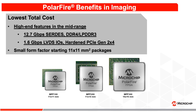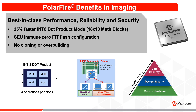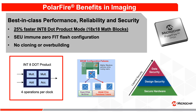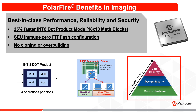All of this is offered in packages as small as 11x11 mm². PolarFire's 18x18 DSP math blocks offer a 25% higher efficiency for INT-8 operation. The FPGA fabric is immune to configuration errors due to alpha or gamma particles at ground and avionics levels. PolarFire provides best-in-class design, application, and data security to protect against device cloning and overbuilding.